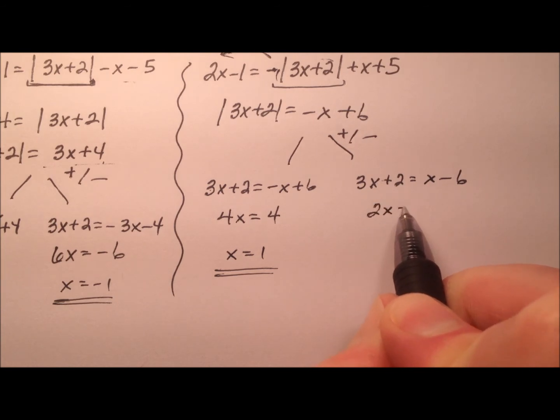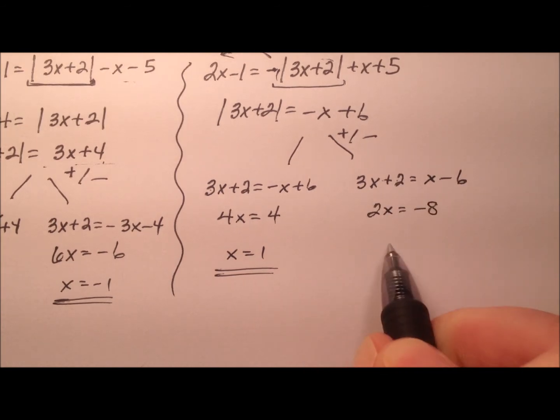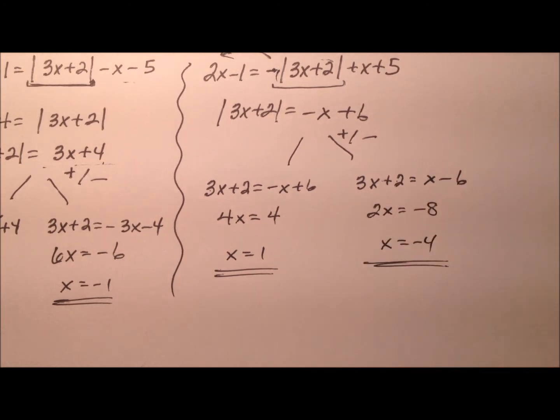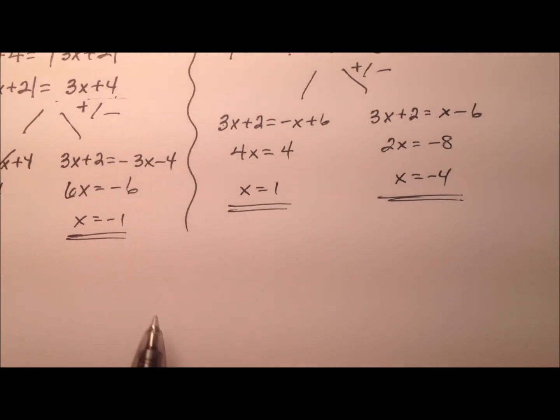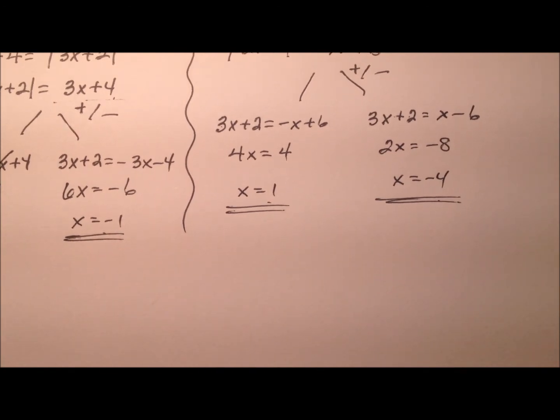so negative 8x equals negative 4. So the first one over here yielded nothing. So we really only have to focus on these three. Negative 1, positive 1 and negative 4.